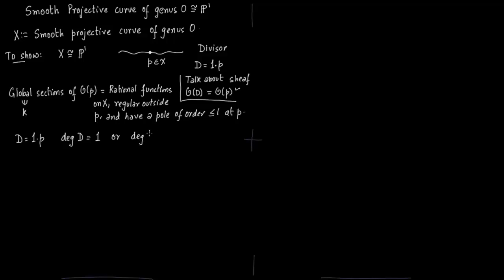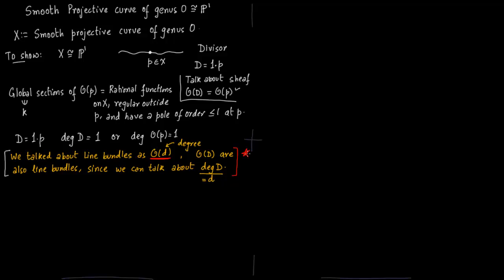Now I want to talk about the degree of this. Degree of this is just 1 because the divisor is 1 times p. So degree of O of this point p is 1. Now we have already talked about line bundles as O of small d where d was some degree. We can also see this O of capital D as line bundles because you can always talk about degree of capital D. You just sum up the coefficients you have there and you get degree of this divisor. So O of d is also a line bundle.